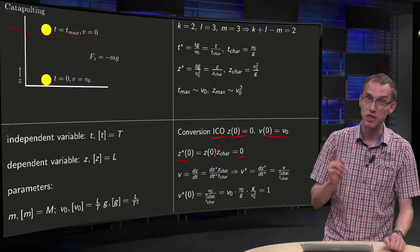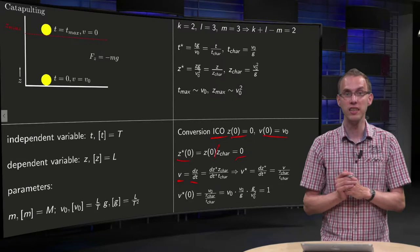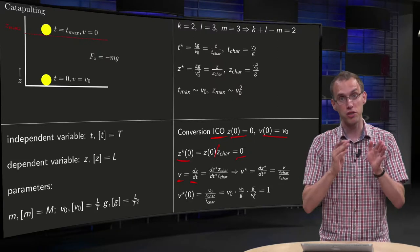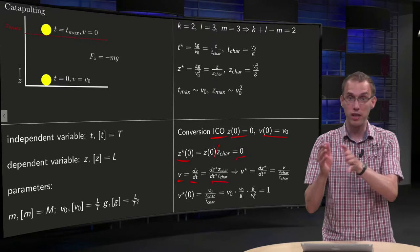What about the velocities? Now we have to be a bit careful. We know v equals dz/dt, but your z equals z* times z_char and t equals t* times t_char.